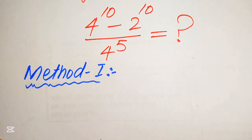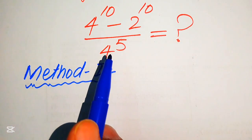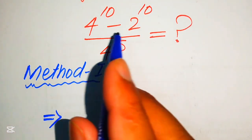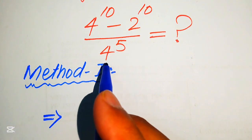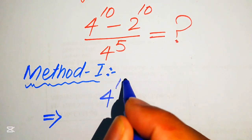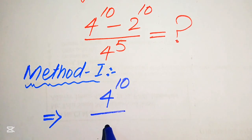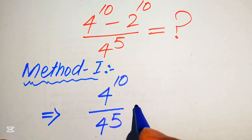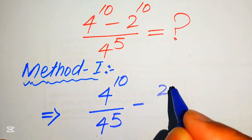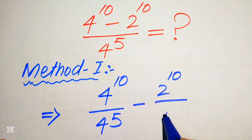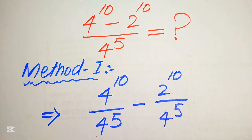The very first thing we are going to do is break this fraction and write these two terms separately over the denominator 4 to the power of 5. It will be written as 4 to the power of 10 divided by 4 to the power of 5, minus 2 to the power of 10 divided by 4 to the power of 5.